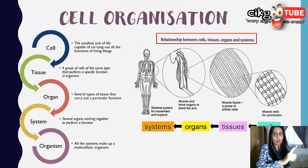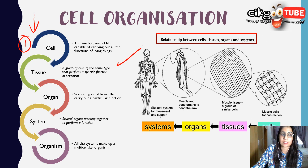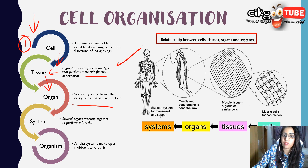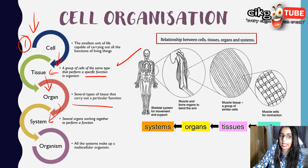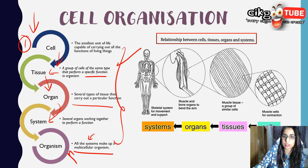Now, cell organization. The cell is the smallest unit of life capable of carrying out all functions in living things. A group of cells of the same type that performs a specific function is called a tissue. Several types of tissues work together to form an organ, which carries out a particular function. Several organs working together to perform a function form a system, and all the systems together make up the multicellular organism.